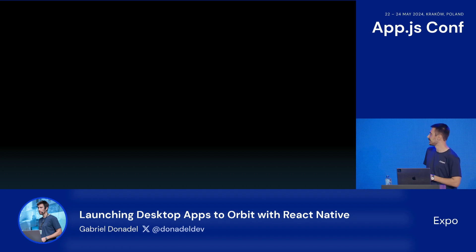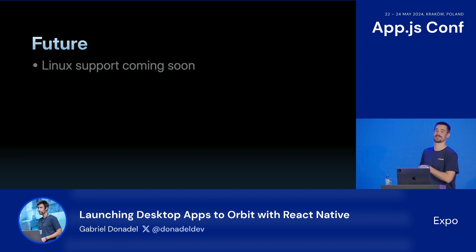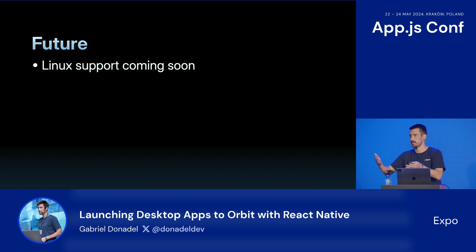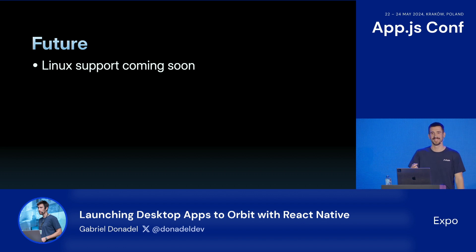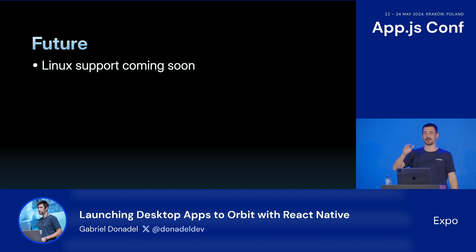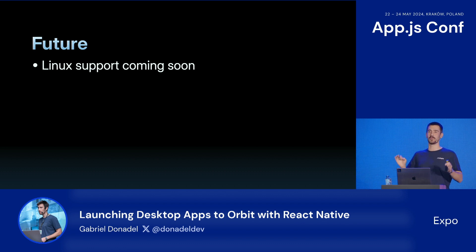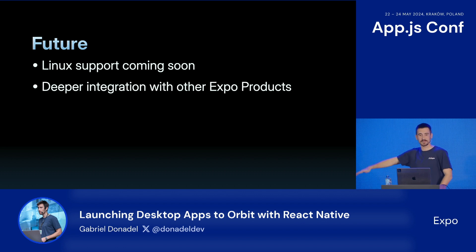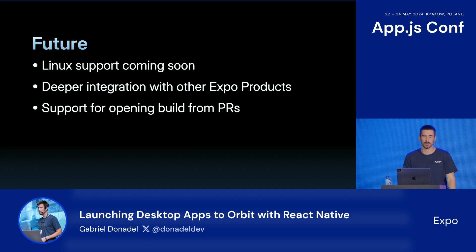So let's talk about the future. Due to the way that we opted to extend Orbit to other platforms using Electron, we kind of already support Linux, but we are still doing some final testing, and binaries will be available very soon — so you can expect proper support for a bunch of distros coming out soon. As always, we are working to provide a deeper integration of Orbit into other Expo products, so you'll see things like opening builds directly from PRs and a bunch of other stuff.